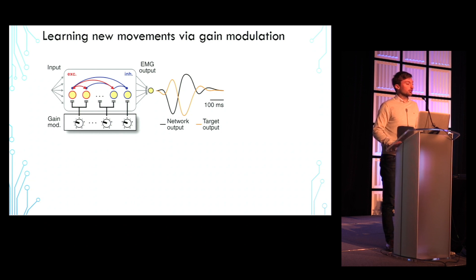This simplistic rule uses a global scalar signal of recent performance to iteratively adjust each neuron's gain, while the network input and architecture will always remain fixed throughout all our simulations.